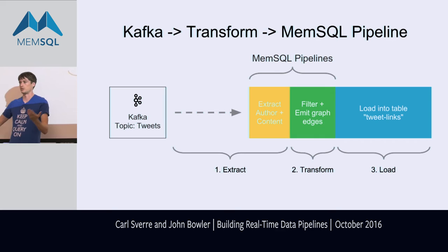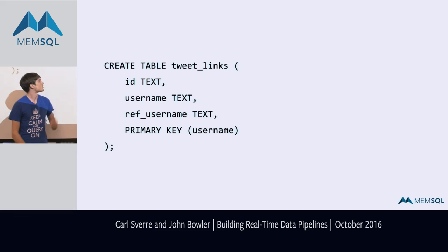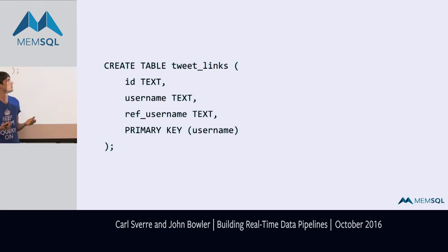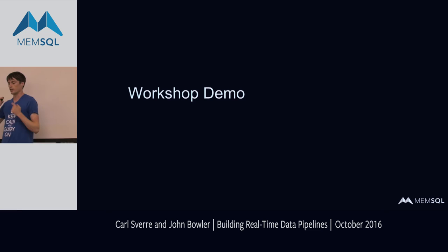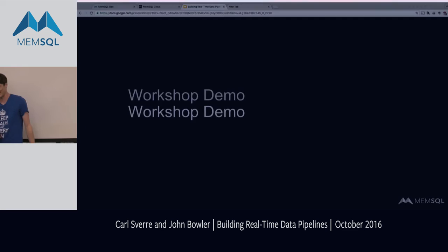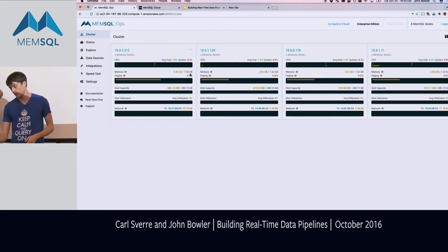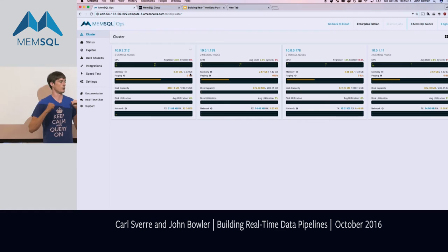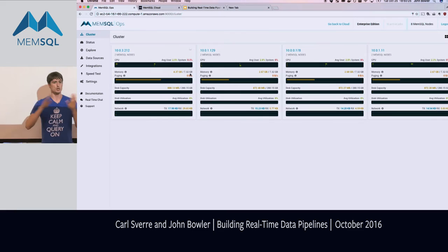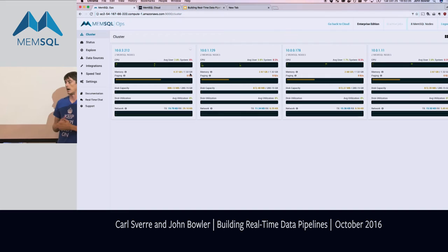The table has columns for tweet ID, username, and ref_username — a standard graph edge table. Before we get started with the workshop: for people who have Docker installed locally you can run it on your computer; for people who don't, we have Amazon instances spun up which you can use to run this entire demo on a single Amazon instance. Engineers in the audience will come around and help you on your own computers.